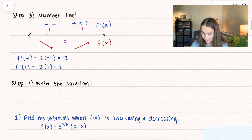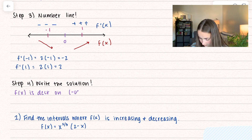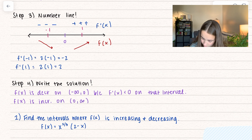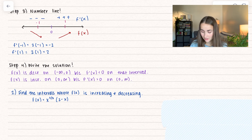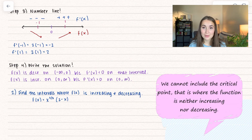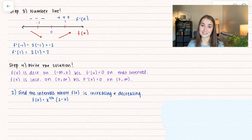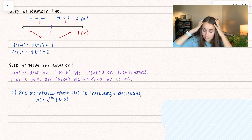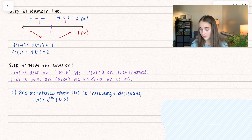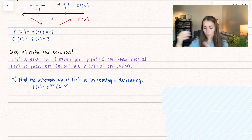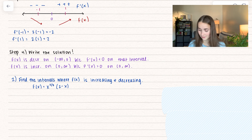Now we can write the solution nicely. f of x is decreasing on negative infinity to 0. Notice I don't include 0 because that's our critical value where f prime of x equals 0 — the function is neither increasing nor decreasing, so we use an open bracket. We say this because f prime of x is less than 0 on that interval. Then f of x is increasing from 0 to infinity because f prime of x is greater than 0 on the interval (0, infinity).